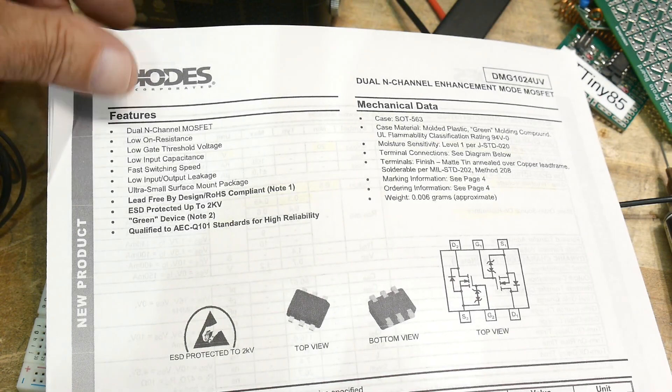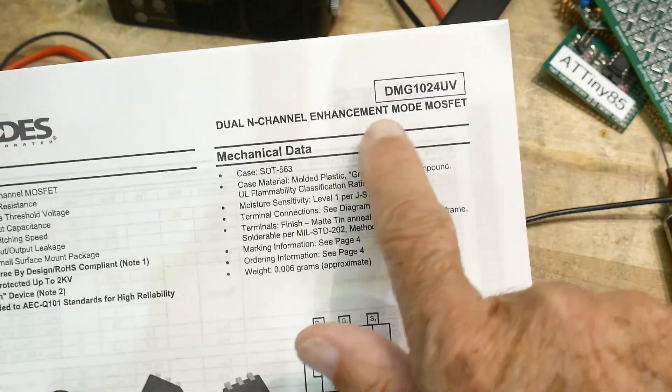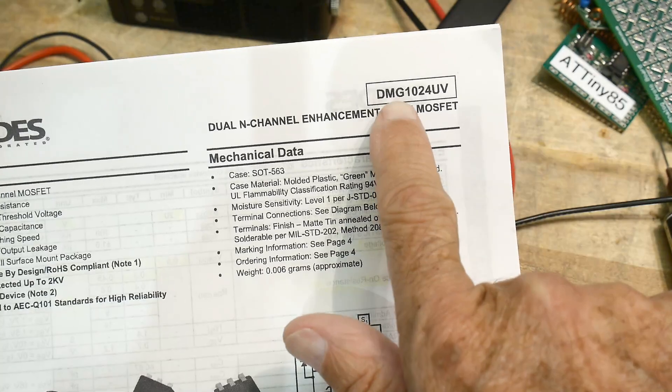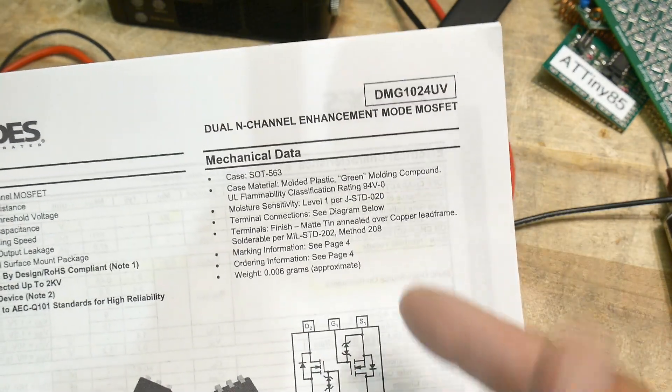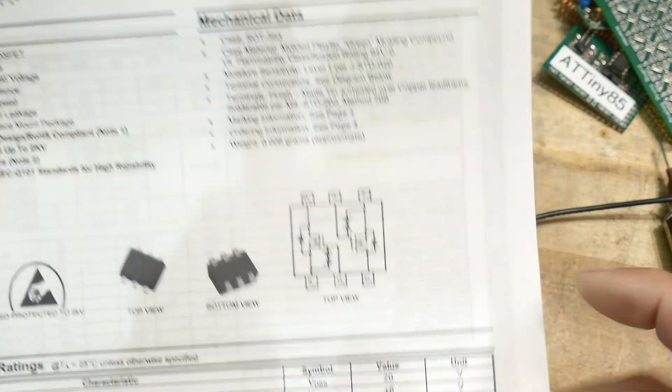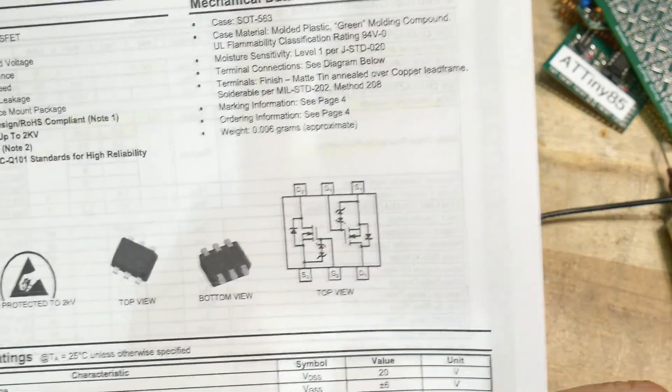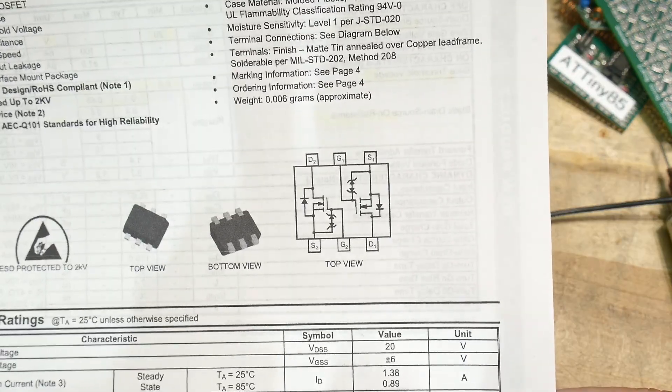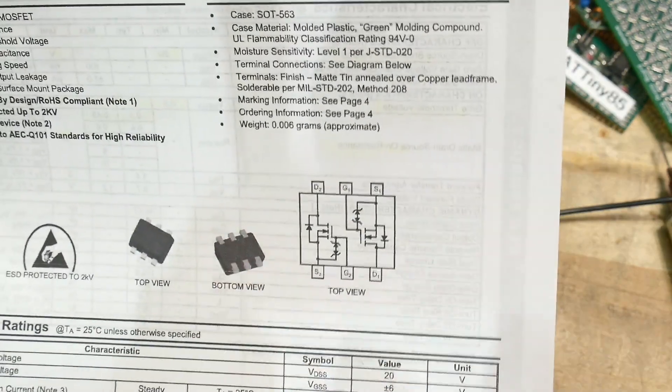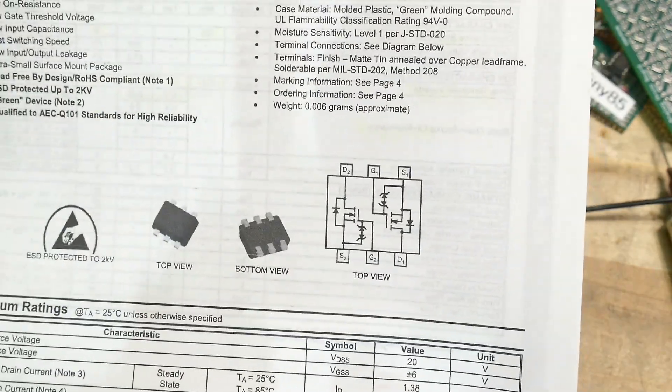All right, chip of the day. This is a DMG1024UV, a dual channel MOSFET. Nice, they're both N-channel so you can turn things on, and they come in a super super tiny little package.